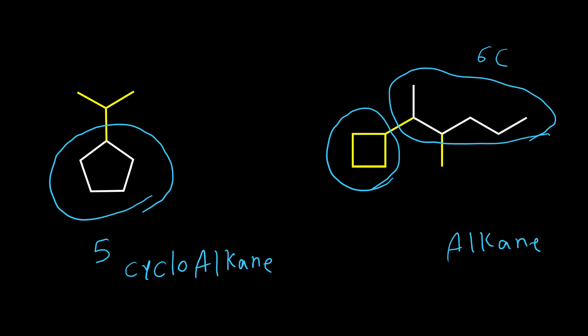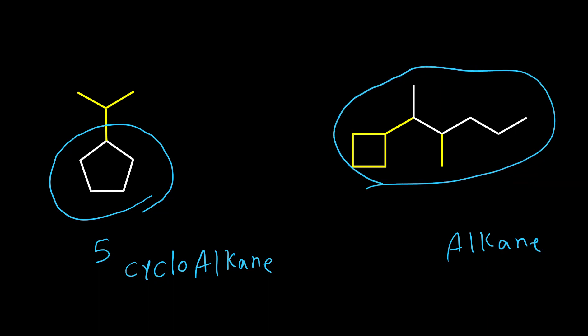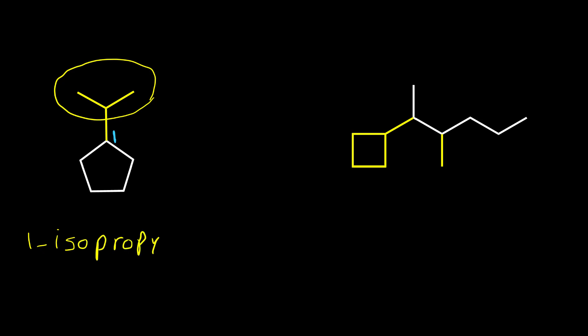First I'm going to explain how we can name a cycloalkane, and in the second part of this video I'm going to explain how we name the other type as well. The second step in naming is numbering the ring. The number one always belongs to the point of attachment in cycloalkanes. For this compound, this substituent group is isopropyl, then we write the name of the cycloalkane: cyclopentane. When we have only one group on our ring we don't write the number one most of the time in the naming.